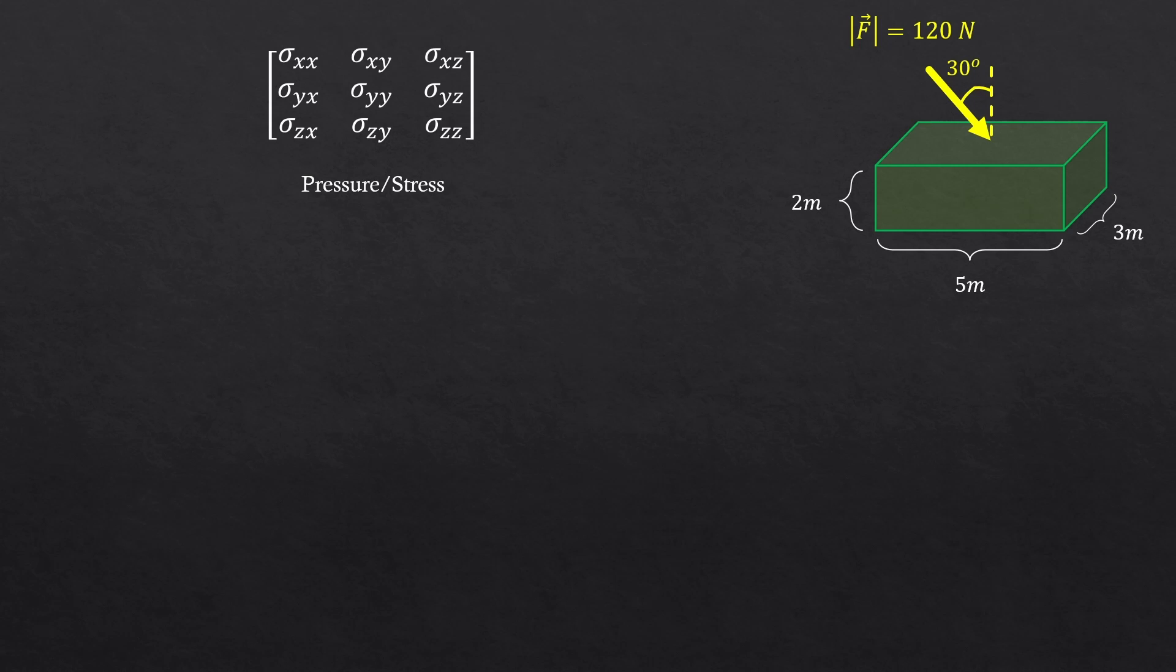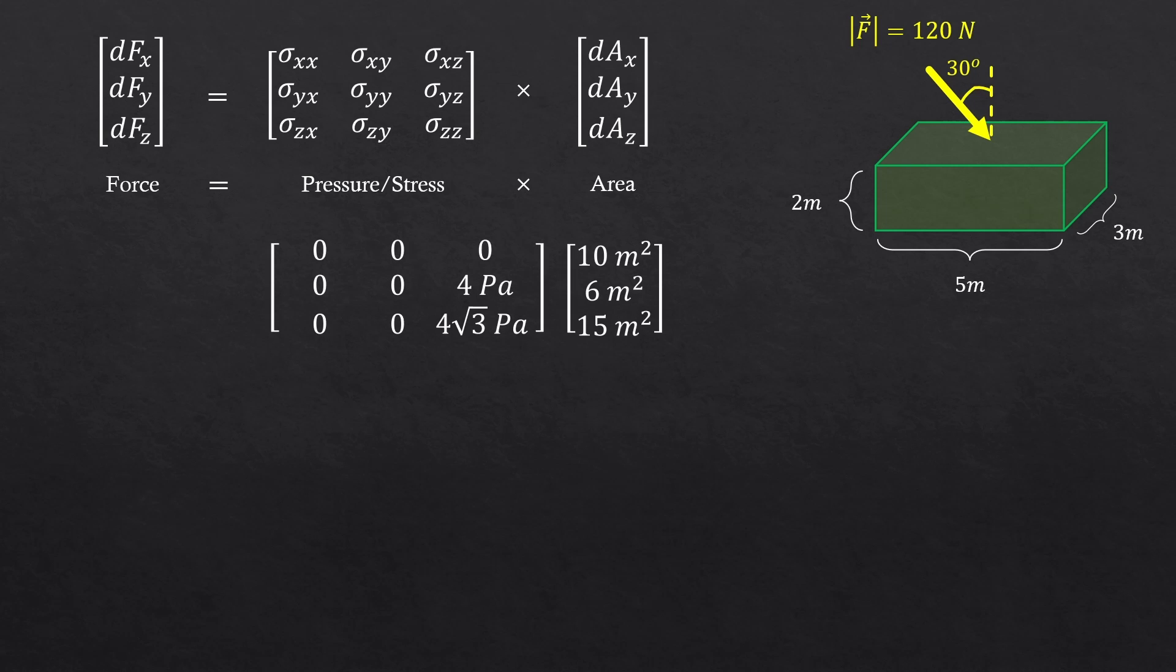Let's bring back our previous example. So if we use this tensor as a transformation matrix, force is pressure times area, right? So the equation will be this. Let's plug in our numbers. You'll see that we get back those force components, which the overall magnitude is 120 newton. This was possible because our stress tensor was described by the force and the area, which means we could use that as a transformation matrix for the force and area.